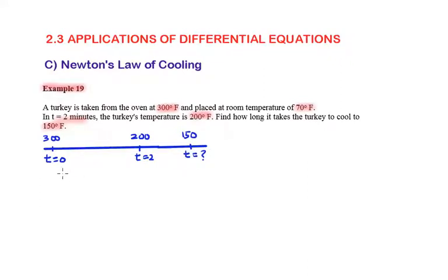First of all, let us start with the model of Newton's law of cooling, where dθ/dt is equal to negative k times (θ minus the room temperature 70).